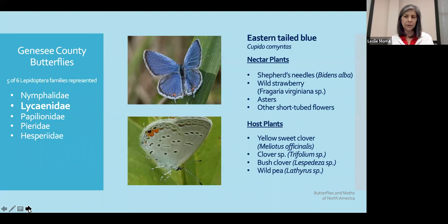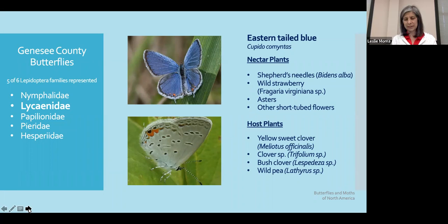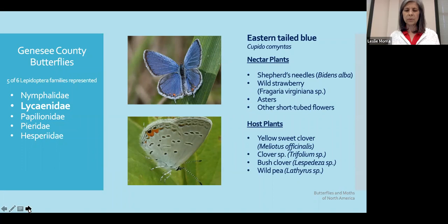Here we have the eastern blue. It's a very dynamic butterfly — when it rests with wings open, you have that brilliant blue, but when the wings are closed, it's an off-white or silver on the backsides of the wings. They like a number of short-tubed flowers as their source for nectar. Their host plants include things you might find in your garden or even your lawn — members of the legume family, or Fabaceae, where they're going to lay their eggs for their caterpillars.